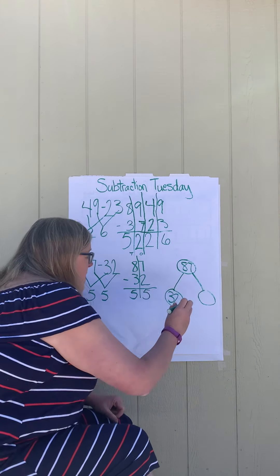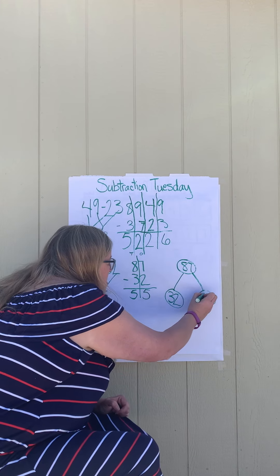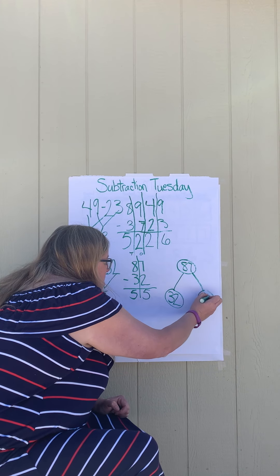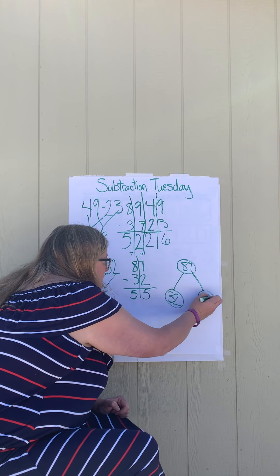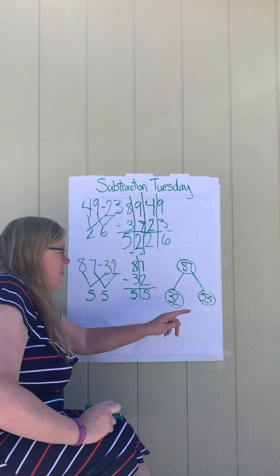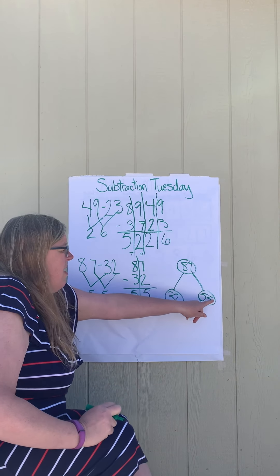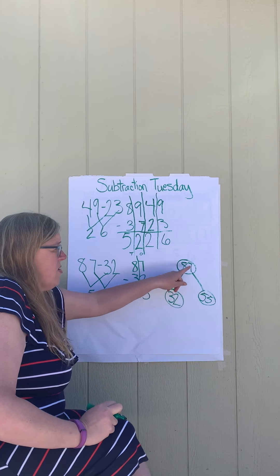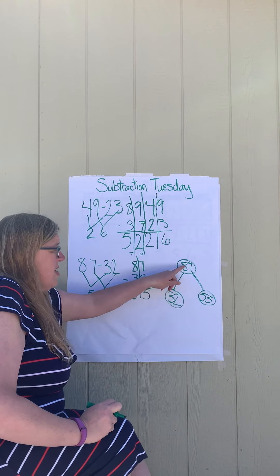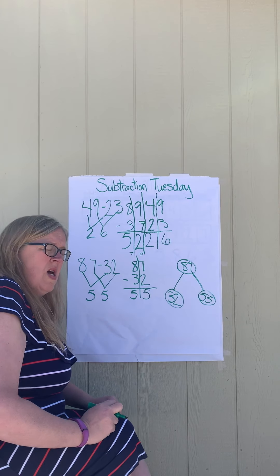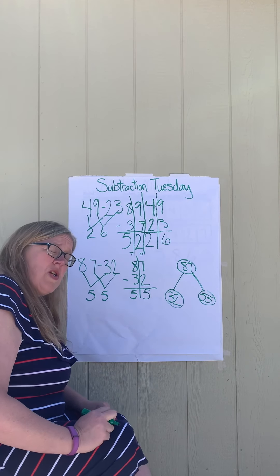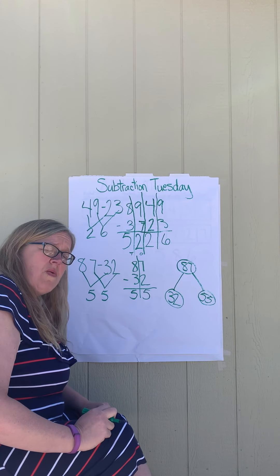Now we're going to put 55 here in the number bond. This is how we check it — let's see if we can add these two numbers together to get that first number. Five plus two is seven, and five plus three is eight. Subtraction is so simple!